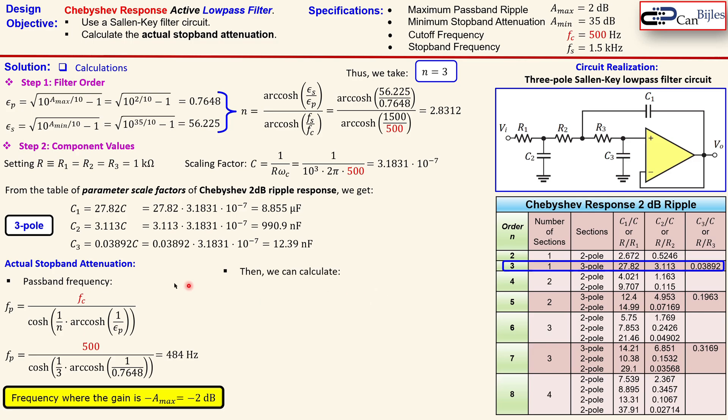Okay, now we can calculate the minimum actual stopband attenuation. How much is that? Now this is the formula for calculating that for the low pass filter Chebyshev response. You see here again the epsilon p, the filter order.